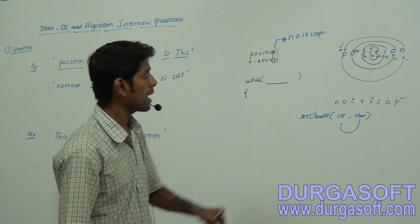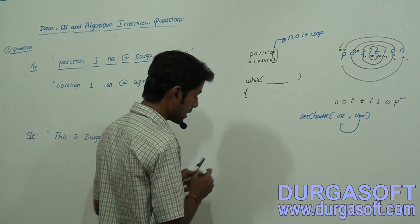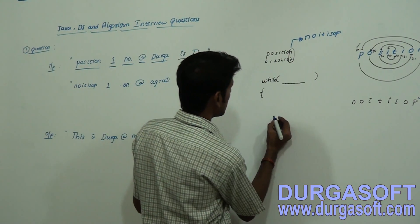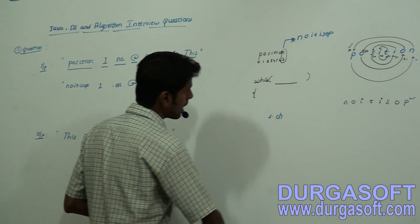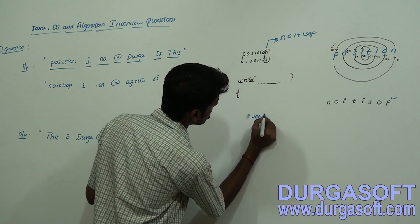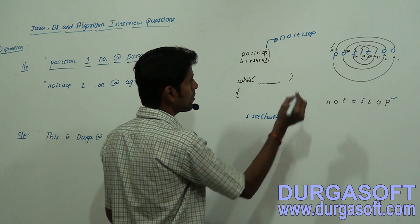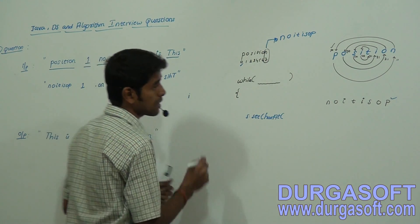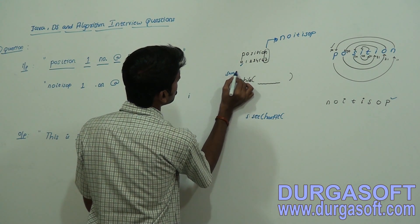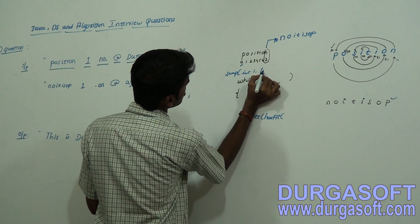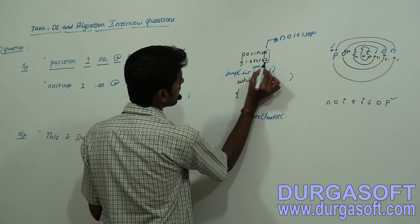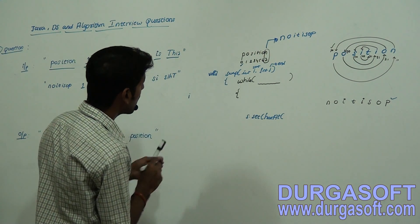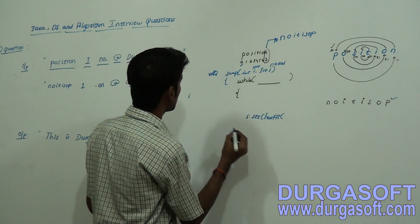Now I am going to use this particular char at. We are going to take one condition. Think that s dot charAt, s dot setCharAt — first let us set the 0th position. This is the swap method which is having int i comma int j. It is containing the start index and it is containing the end index.